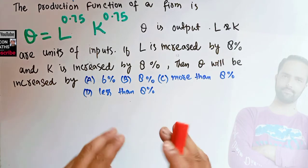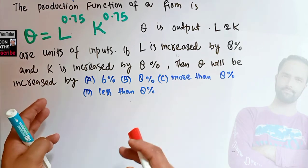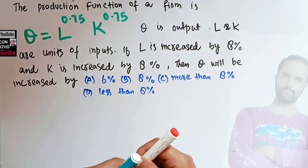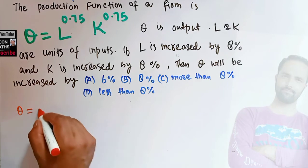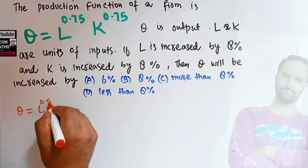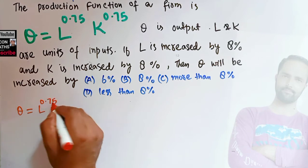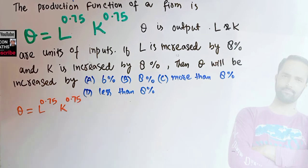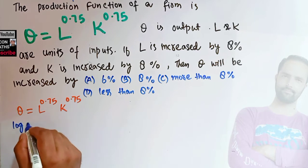Now let us try to solve this question. I will show two methods — first the proper method, then the shortcut method. So the proper method: we are given the production function Q = L^0.75 × K^0.75. Now let's take the log on both sides, so log of Q is equal to...